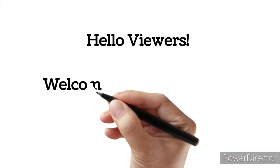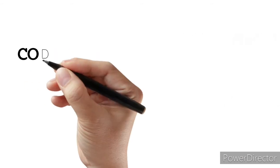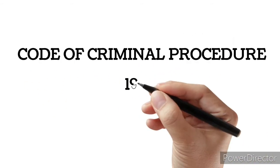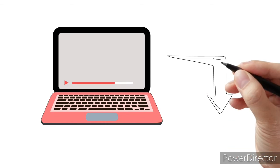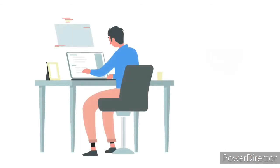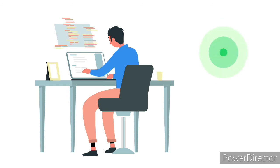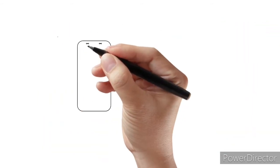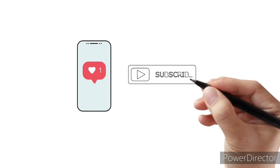Hello viewers, welcome back to my channel Legal Decipher. In the previous video, we had talked about Chapter 21A of the Code of Criminal Procedure 1973. If you have not seen that video, you can go and check it — the link is in the description below. Today we are going to talk about Chapter 22 of the Code of Criminal Procedure. If you are new here, you can like and subscribe to my channel to get video notifications.